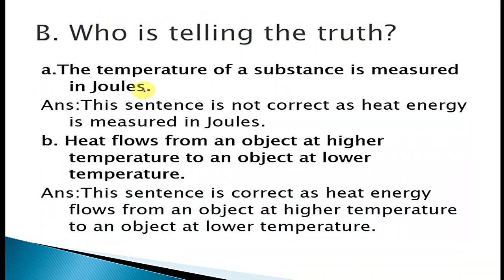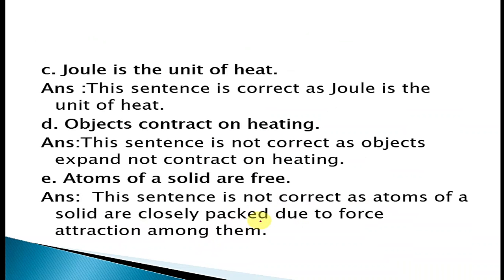Next question: Who is telling the truth? A. The temperature of a substance is measured in Joules — this sentence is not correct, as heat energy is measured in Joules, not temperature. B. Heat flows from an object at higher temperature to an object at lower temperature — this is correct. C. Joules is the unit of heat — this sentence is correct, as Joules is the unit of heat.